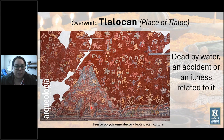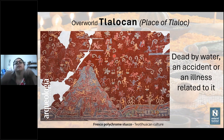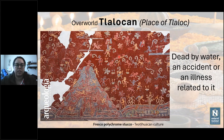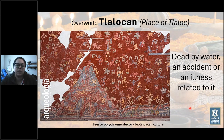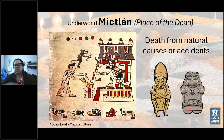You can see the people swimming there, having a great time — dancing, playing ball games, singing. The volutas (speech scrolls) indicate singing and chanting. There are a lot of flowers and butterflies. It was basically what we would consider paradise in the occidental tradition. Then the fourth area, the Mictlan, was the place where the essences or souls of those who died from regular causes — old age, or accidents unrelated to water — would go.